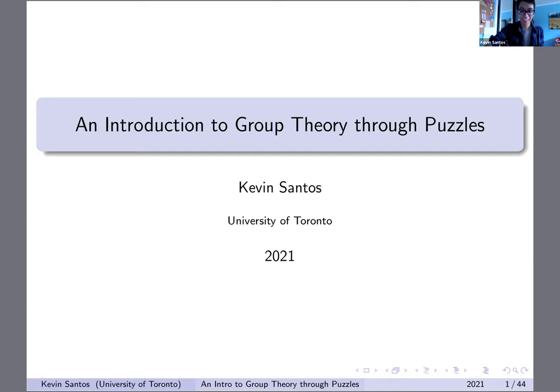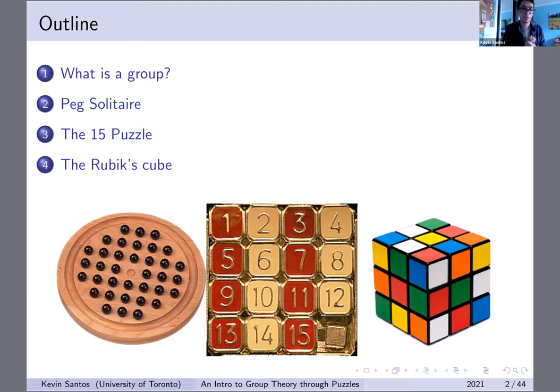Thanks to everyone for coming and thanks to the organizers for having me. Today I will be talking about introduction to pretty elementary group theory stuff, and I'm going to apply that to some fun puzzles. Let me just go over what I'll be talking about. The main question of group theory is: what is a group? I'll go over some introductory concepts with groups, and then I'll apply those to these three puzzles I have right here: Peg Solitaire, the 15 puzzle, and the Rubik's Cube. If there are any questions, you can interject or just type them in the chat.